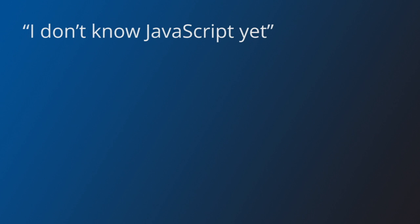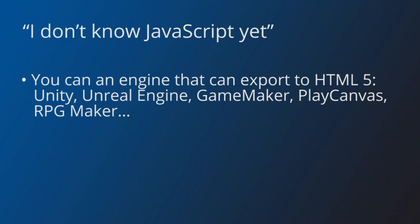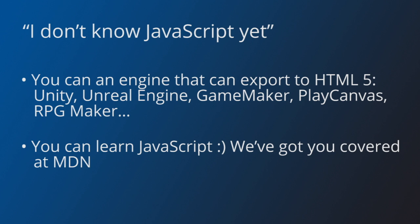If you are new to JavaScript development, you have two options. One is to use an engine you are already familiar with that can export to HTML5. Some of these engines include Unity, Unreal Engine, PlayCanvas, GameMaker, and more. The other option is to learn JavaScript. Check it out at the Mozilla Developer Network, where you can find plenty of documentation, articles, and tutorials to get started.